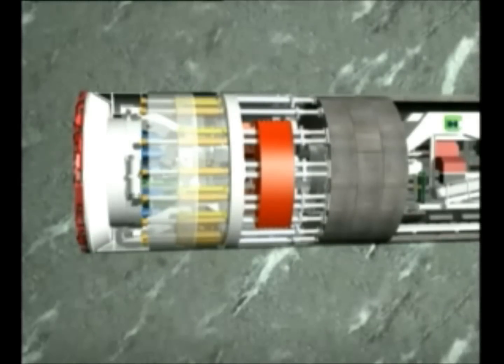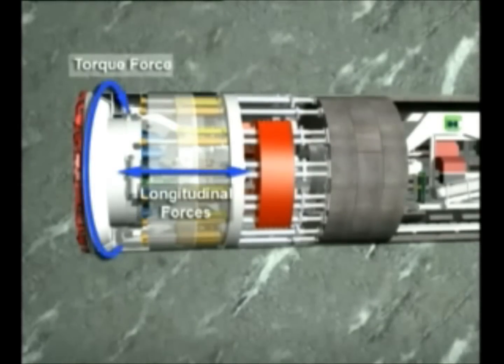The reaction forces, torque and longitudinal forces, are transferred to the rock through the extended gripper shoes, which are located in the middle section of the machine.